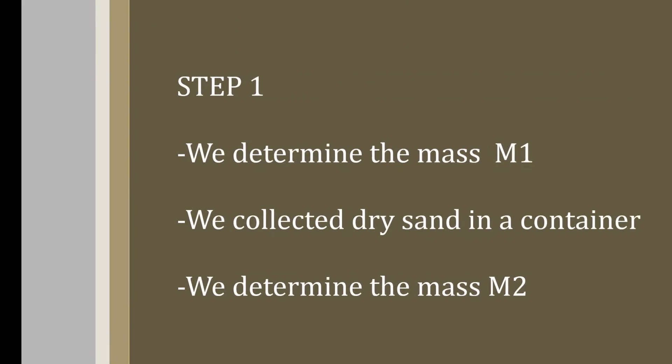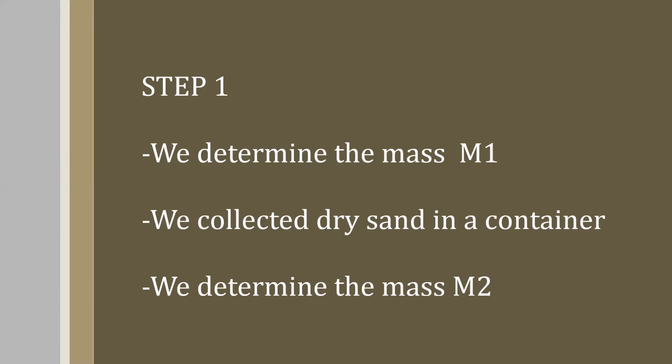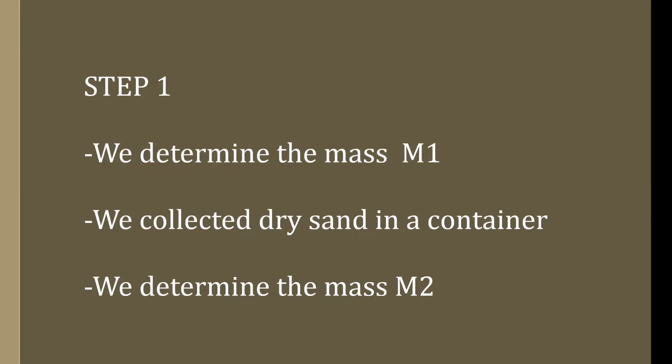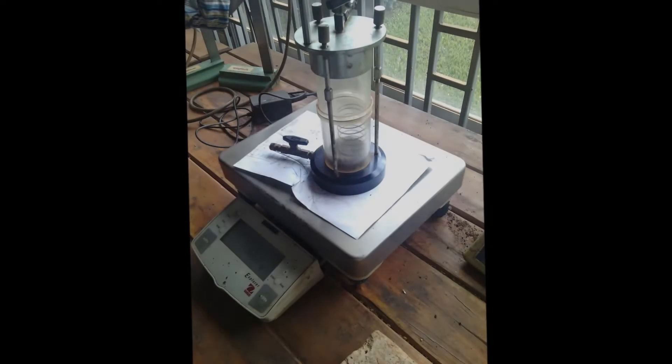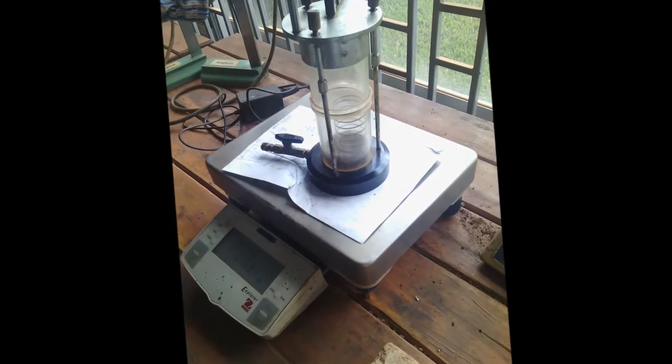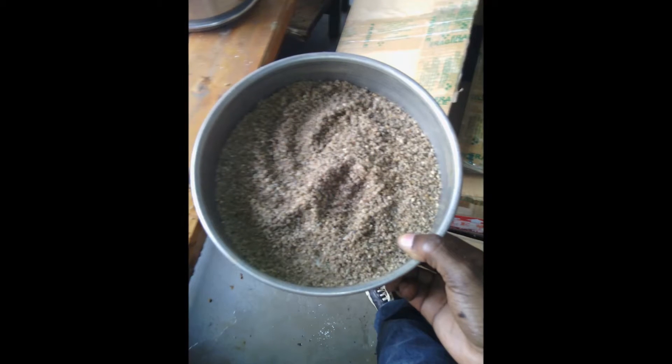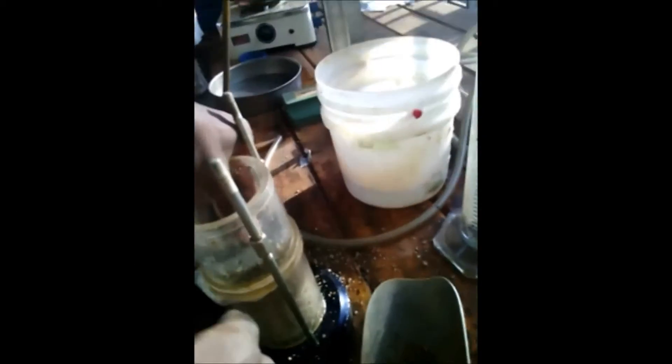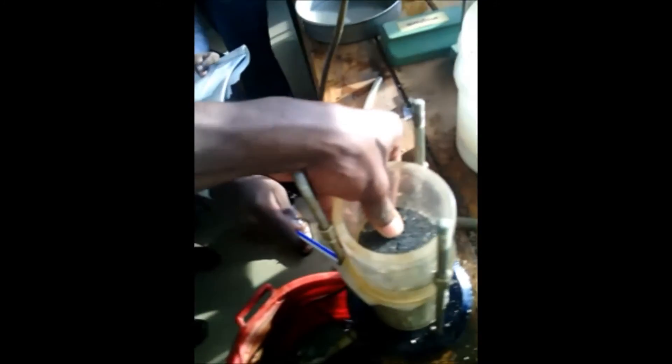In the permeability test, we determine the mass M1, which is the mass of some equipment we used — the plastic specimen tube, the porous stone, the spring, and the two rubber stoppers. After finding mass M1, we find the mass M2, which is the mass of this equipment and the specimen together, so that we subtract to get the mass of the specimen alone. This mass is used to determine the specific gravity and the weight ratio of the specimen.